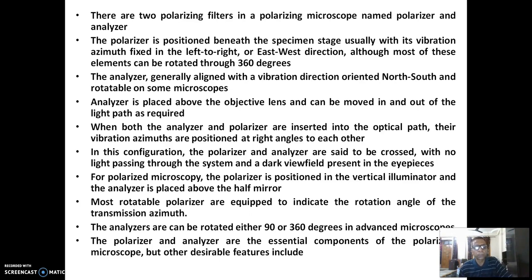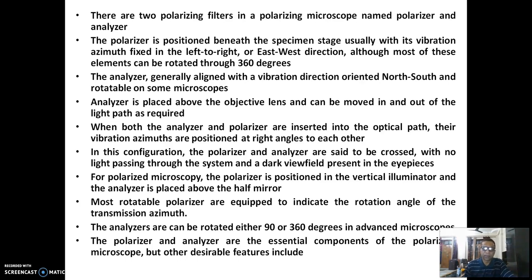For polarized microscopy, the polarizer is positioned in the vertical illuminator and the analyzer is placed above the half mirror. Most rotatable polarizers indicate the rotation angle of the transmission azimuth. The analyzers are rotated either 90 or 360 degrees in advanced microscopes. The polarizer and analyzer are essential components of a polarizing microscope, and without them we cannot estimate the birefringence value of different textile fibers.